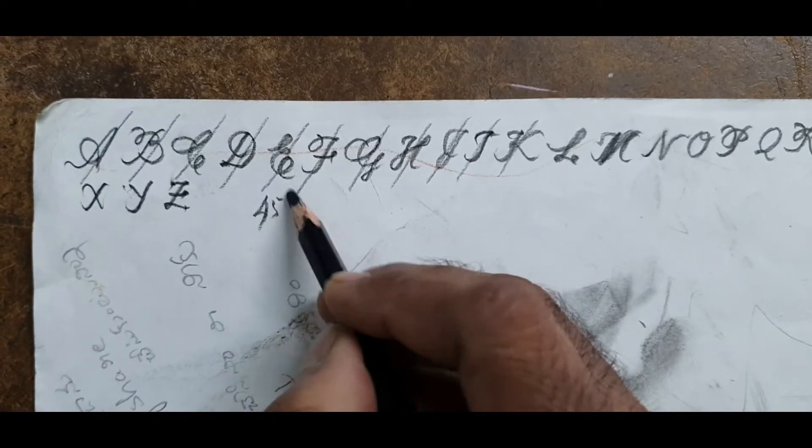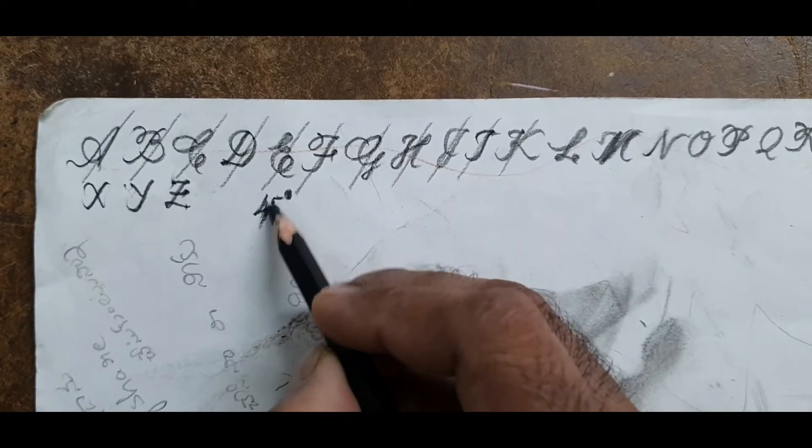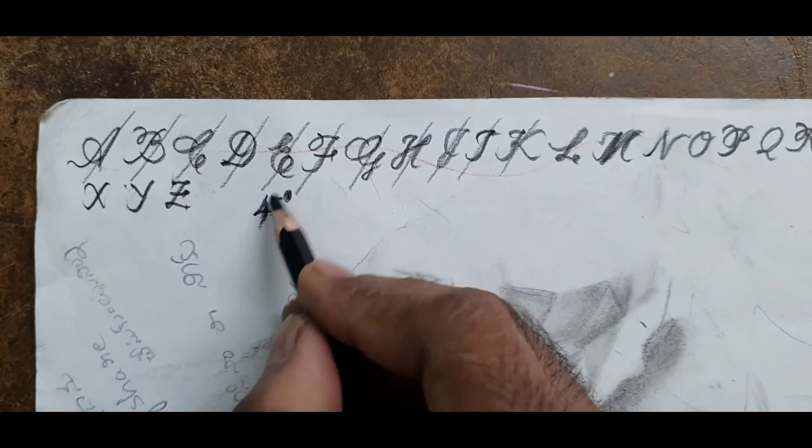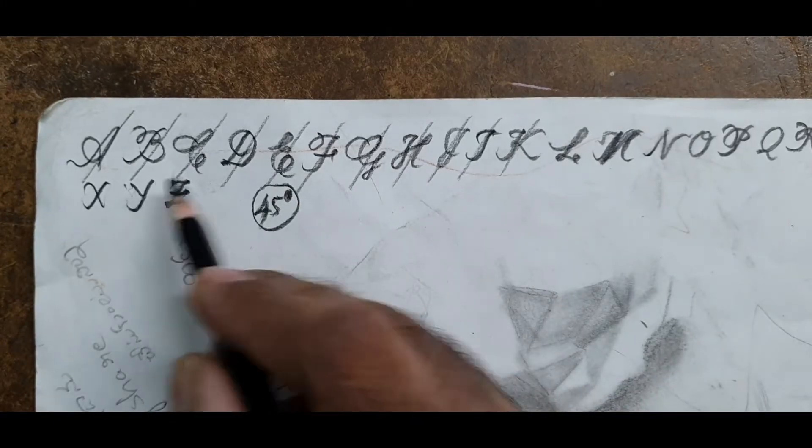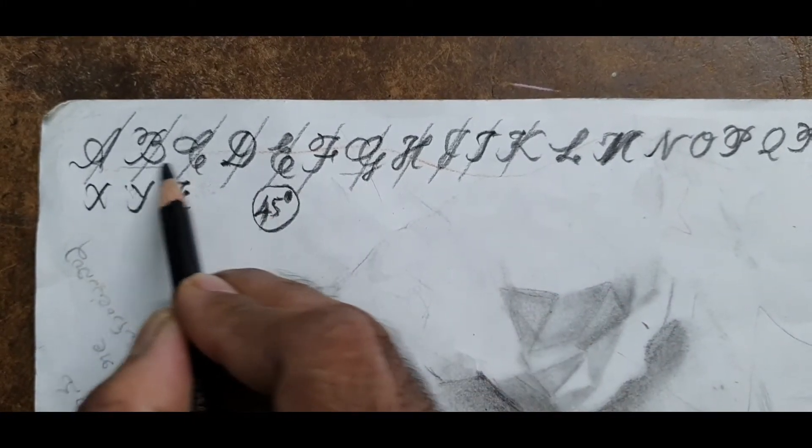Remember, this is the basic rule of English font writing: 45 degrees. And second thing, whenever you are writing, all these are supposed to be in the same line.